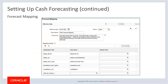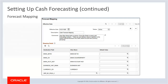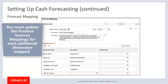Use the forecast mapping to set up dimensions for reporting cash forecasting numbers. In addition to the system-defined groupings, you can map up to seven additional cash forecast dimensions. For these dimensions, you can process cash forecast results and view them. For each additional dimension mapped, you must update the position source mappings on the position source page and ensure that the source data has a value for each mapped dimension.